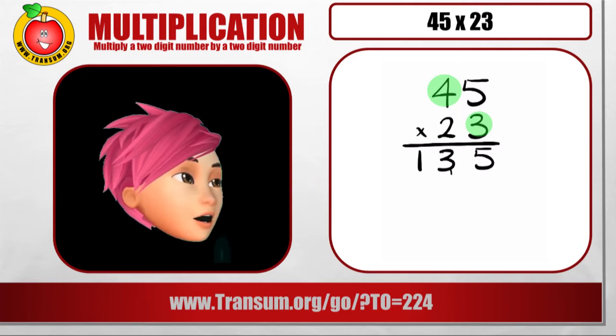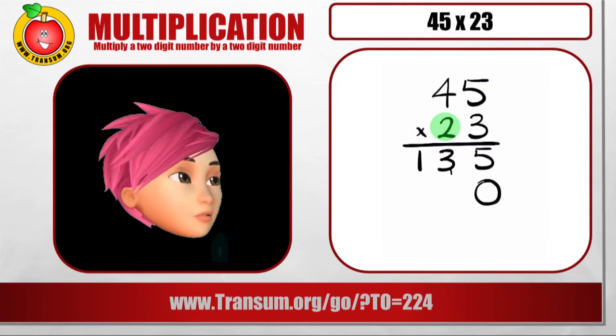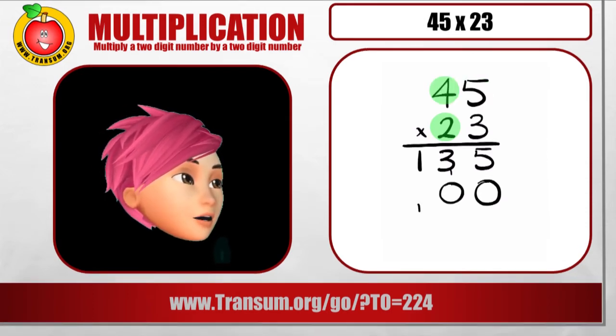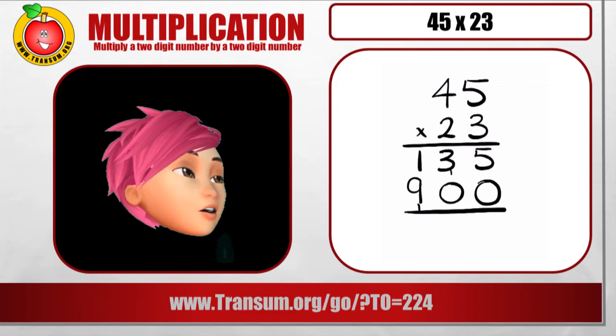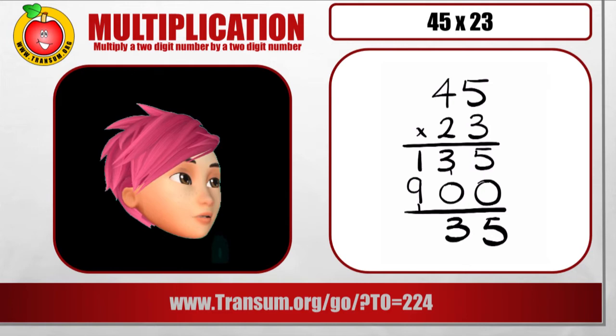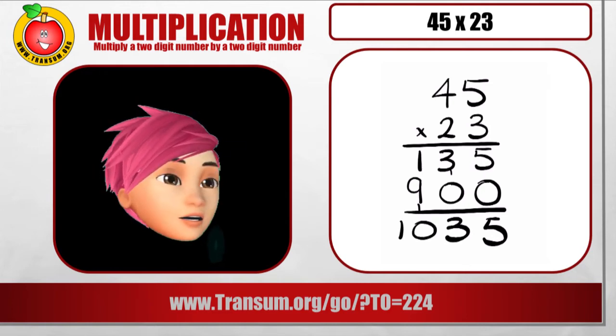So you can write the 13 in there. Now because we're going to multiply by the 20, let's put a 0 there and then we can just multiply by 2. 2 times 5 is 10. Carry the 1. 2 times 4 is 8. Add on that 1. 900. Add those 2 parts together. 5 and 0 is 5. 3 and 0 is 3. 1 and 9 is 10. 1,035.